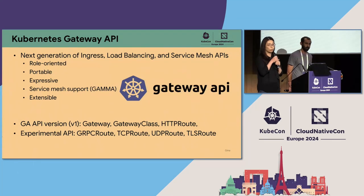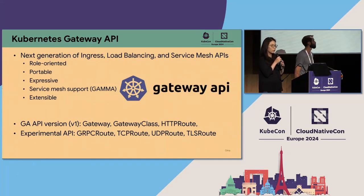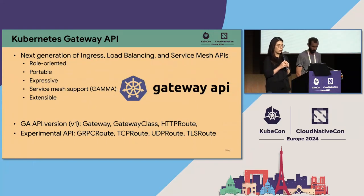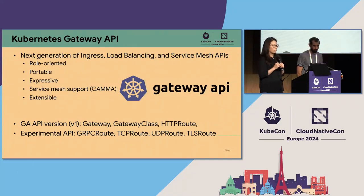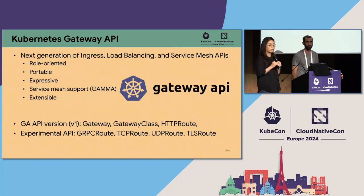The Gateway API, primarily known for its north-south traffic capabilities, is evolving to support east-west use cases within service meshes — meaning it can be used to route communication between services, where the route attaches directly to the service. The Gateway API also seamlessly integrates with custom solutions, enabling use of specialized load balancers or service meshes. Several key APIs graduated to GA last October, including gateway class and HTTP route. Other significant resources are under active development in the experimental channel. We are planning to bring gRPC route to GA in the April release.